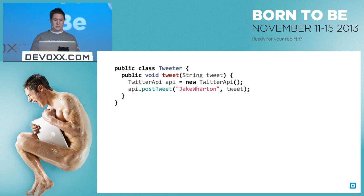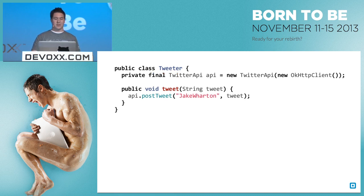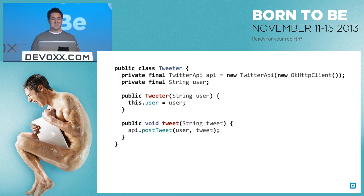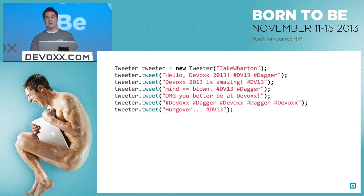Moving on to the tweeter class — we know we are passing in our OkHttp client, so let's include that when we instantiate our Twitter API. This is also being wasteful because it's creating a Twitter API instance every time we want to post a tweet, so we can pull this out into a field. The username is hard coded, which you obviously would never want to do, so we should take that in as a constructor argument. This technically becomes a dependency, even though you might not think of it as one.